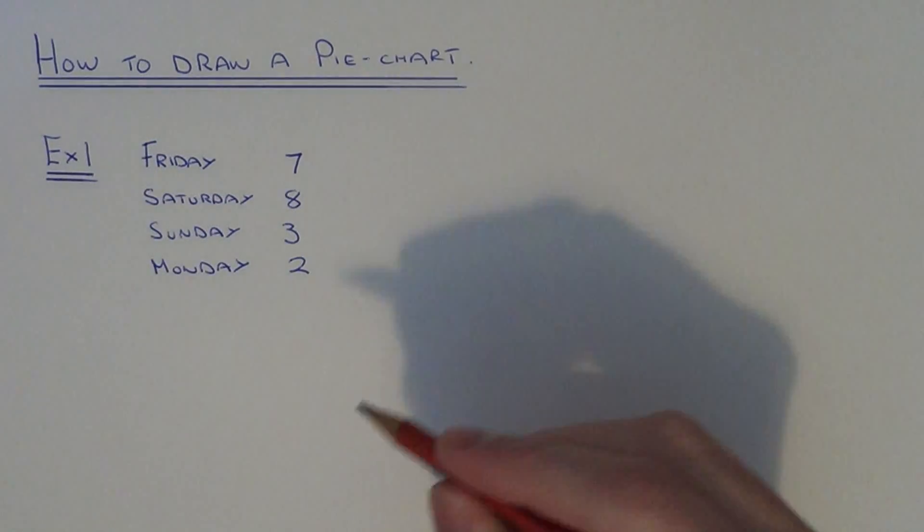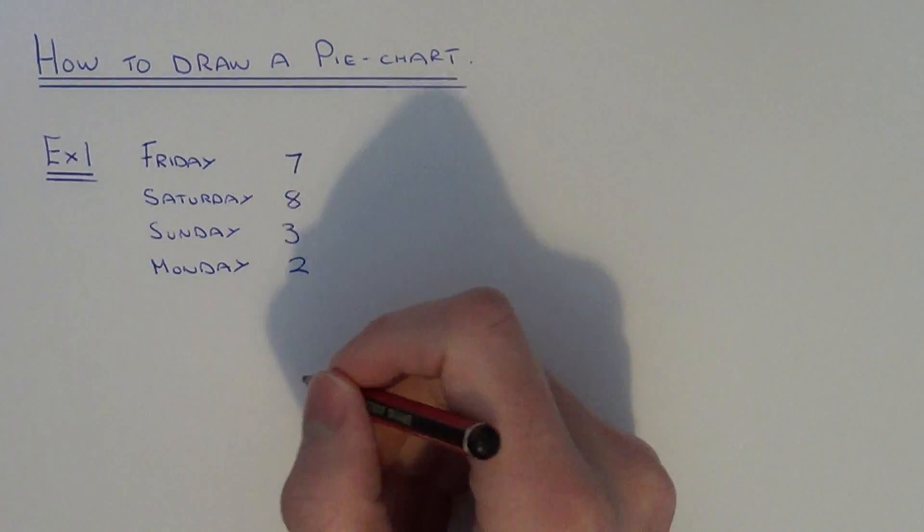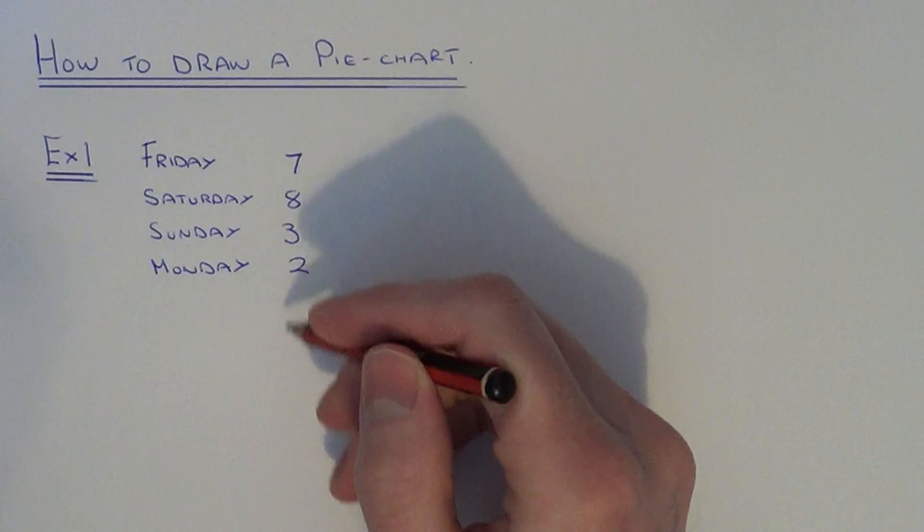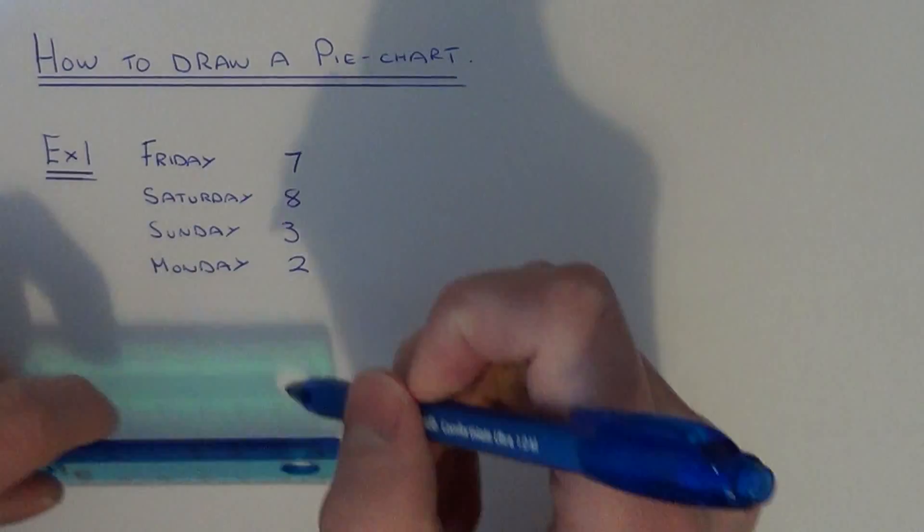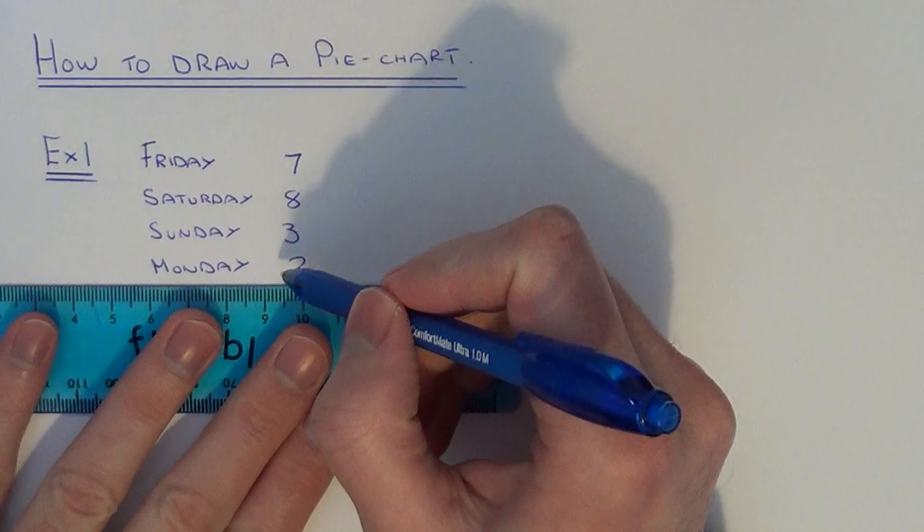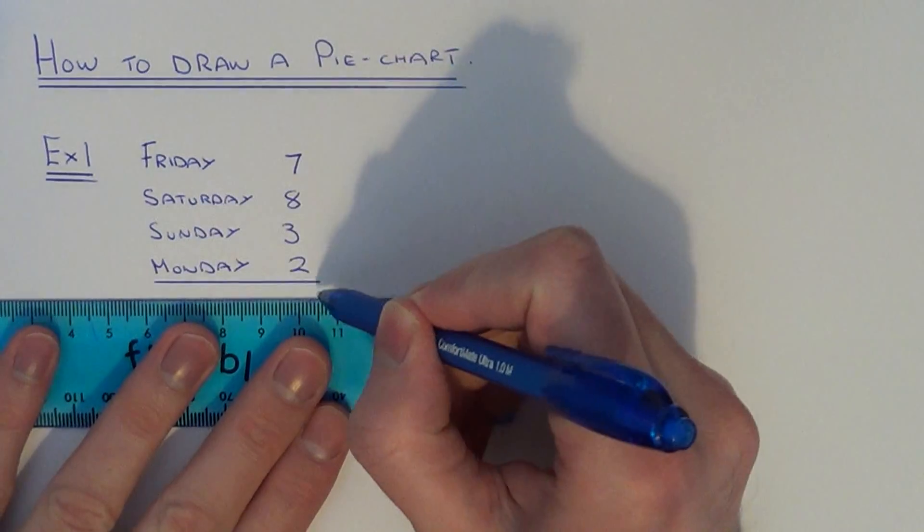Before you start drawing your pie chart, first of all you need to work out the angles for each of the days of the week. Do this by working out the total amount of people that took part in the survey.